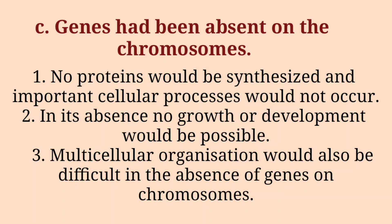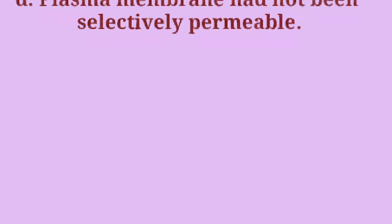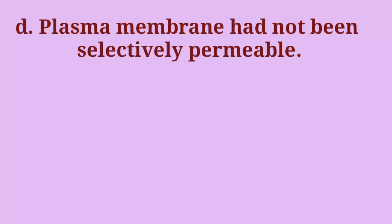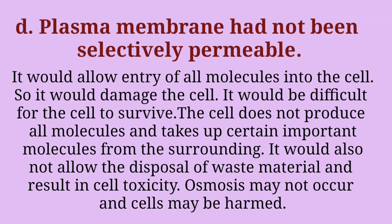D. If the plasma membrane had not been selectively permeable: It would allow entry of all molecules into the cell, which would damage the cell. It would be difficult for the cell to survive. The cell does not produce all molecules and takes up certain important molecules from the surrounding. It would also not allow the disposal of waste material, resulting in cell toxicity. Osmosis may not occur and cells may be harmed.